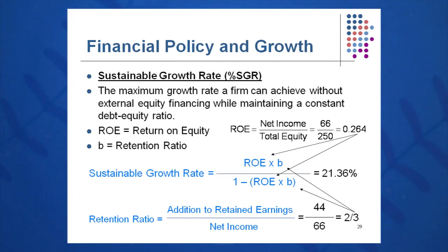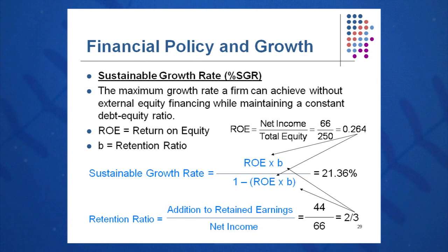SGR is ROE times B divided by one minus ROE times B — similar to IGR but substituting ROE instead of ROA. Using year one actual values: ROE equals net income over equity, so 66 over 250, giving 26.4% return on equity. B is again two-thirds, or 44 over 66. Leaving it as 44 over 66 is helpful because the math simplifies to 44 over 250, divided by one minus 44 over 250, yielding a sustainable growth rate of 21.36%.